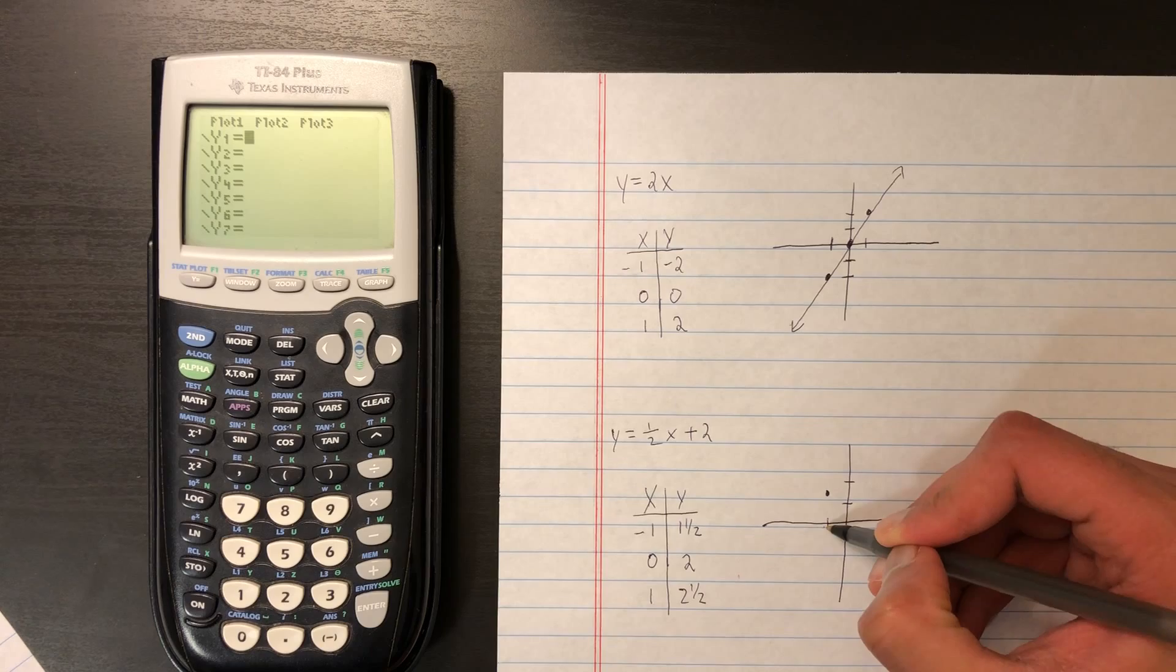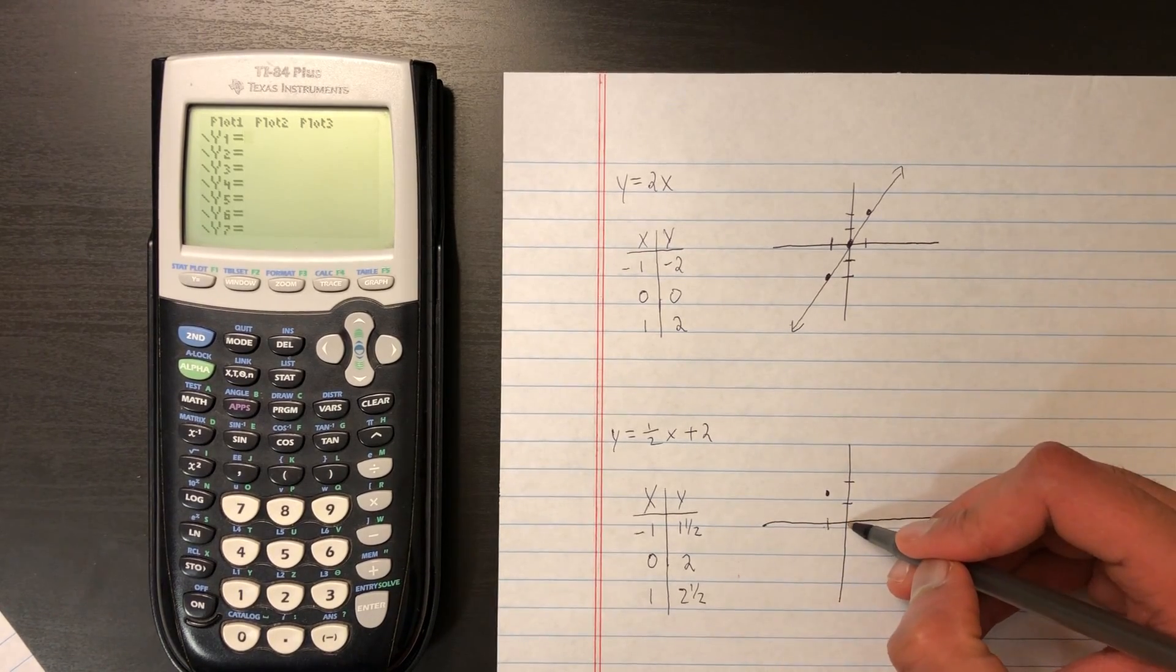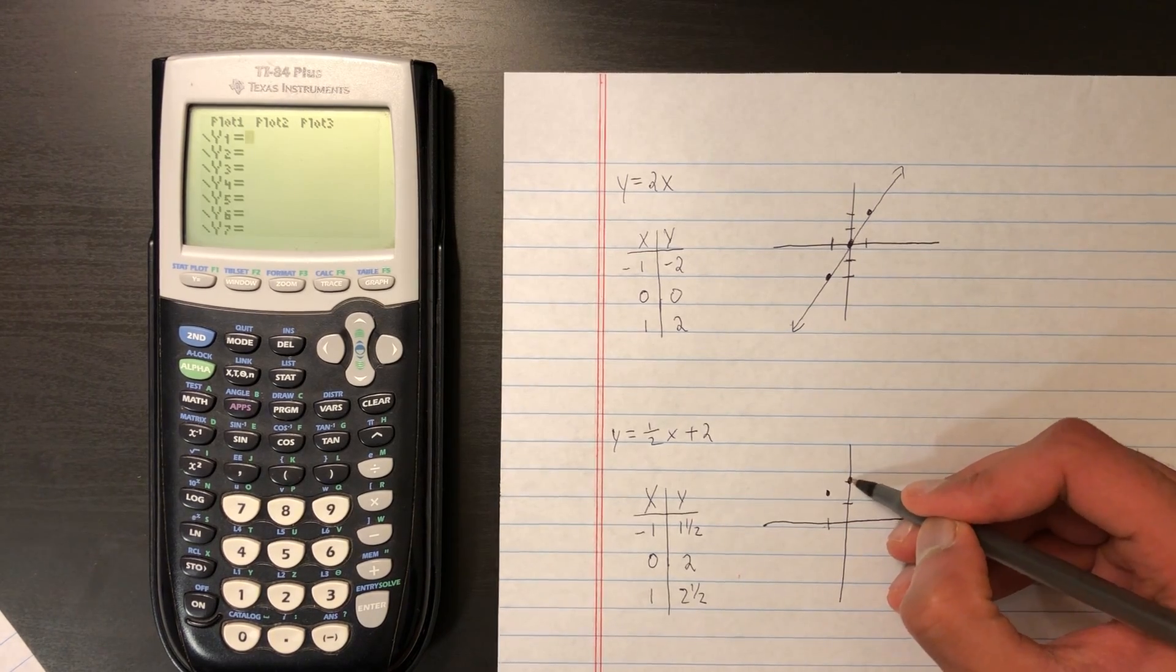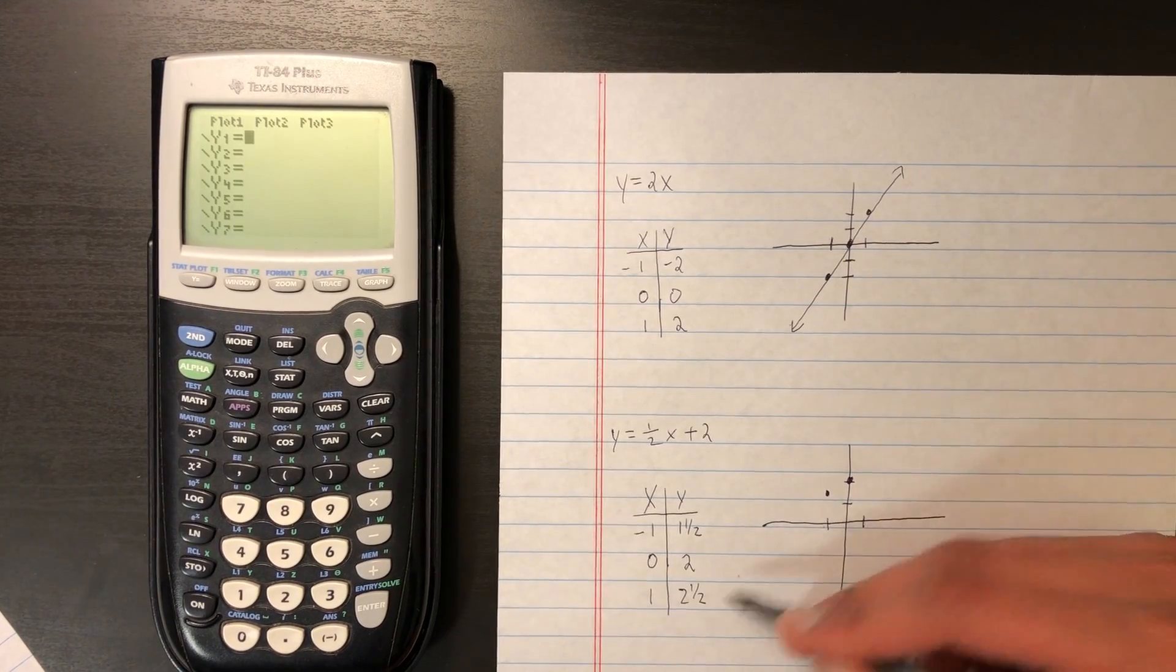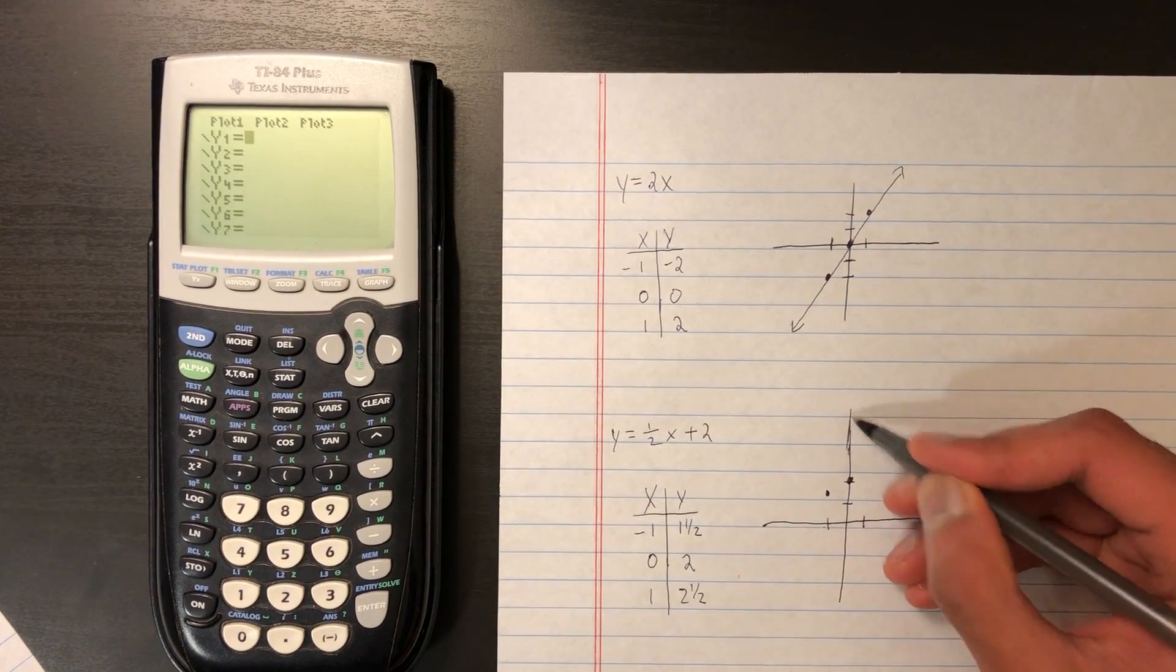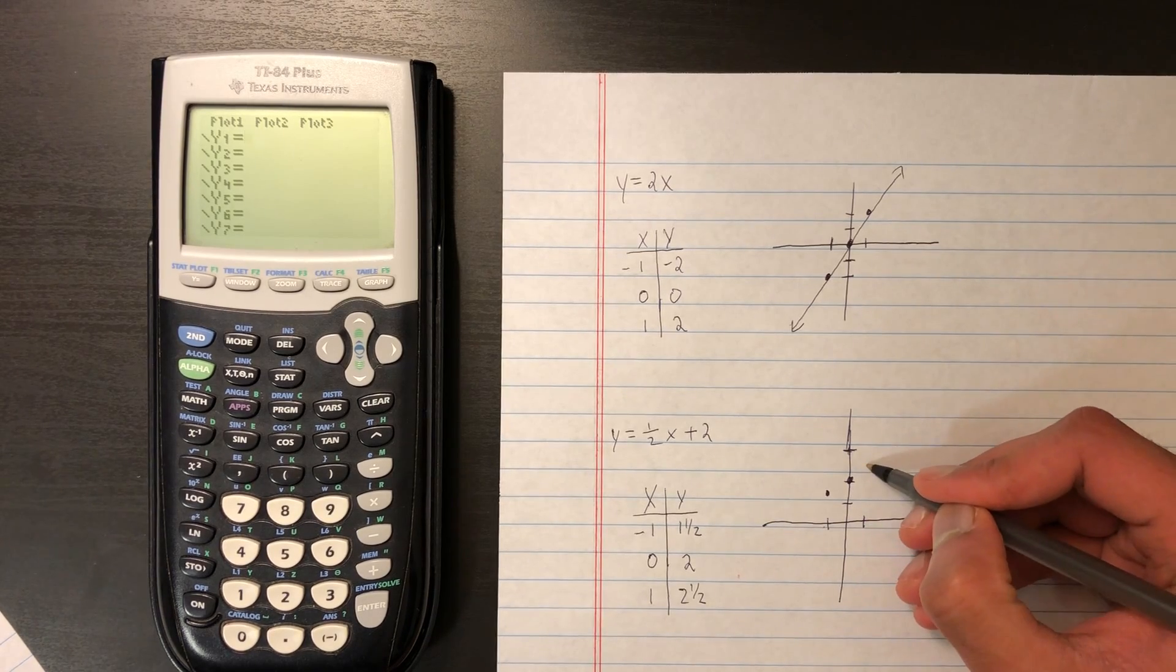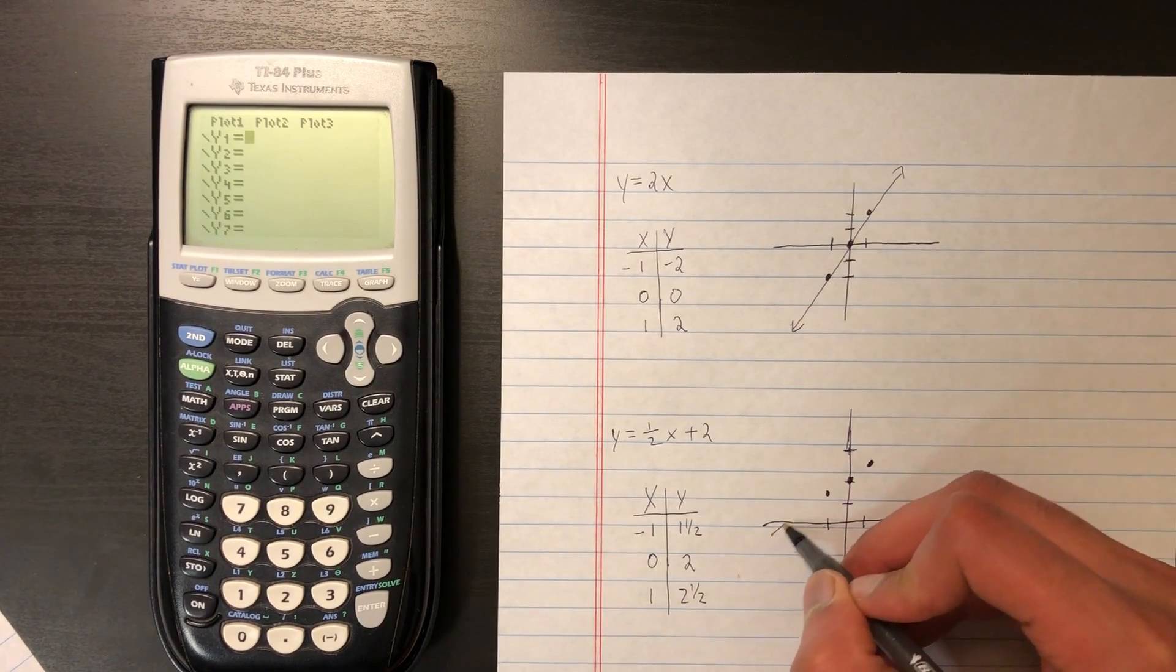So again, negative 1, and up 1 and 1 half. And 0, 2. Then 1, and then 2 and 1 half for the y values. So up 2 and 1 half, which is around right there. And the last thing I'm going to do is just connect the dots.